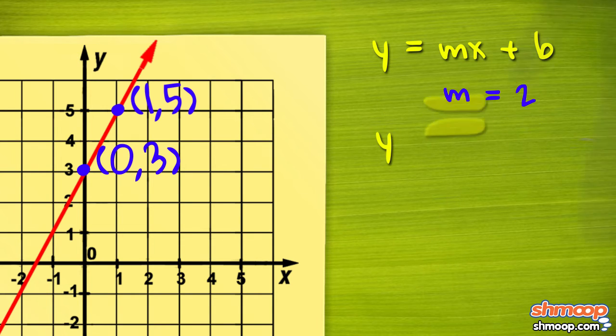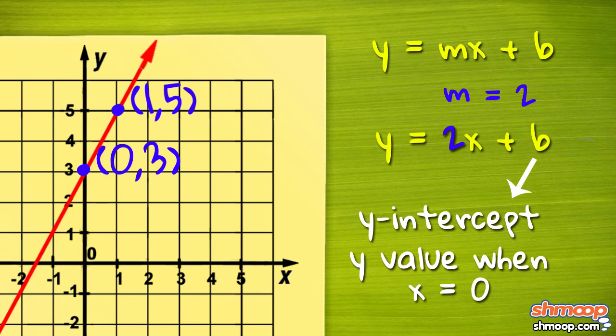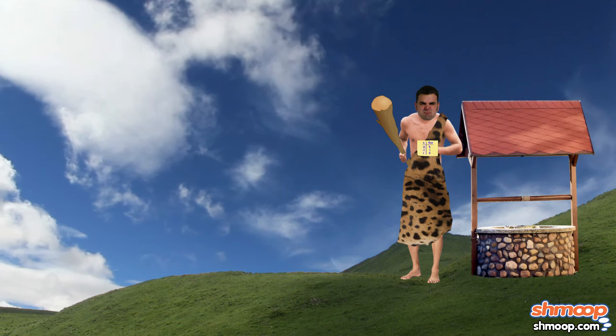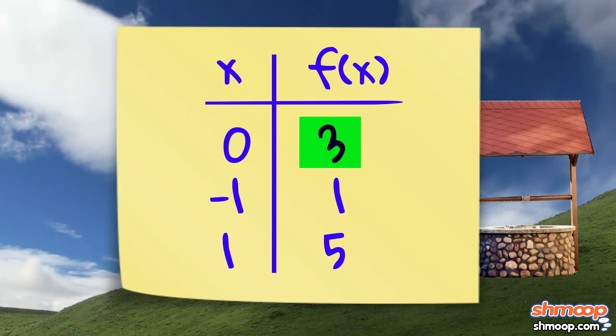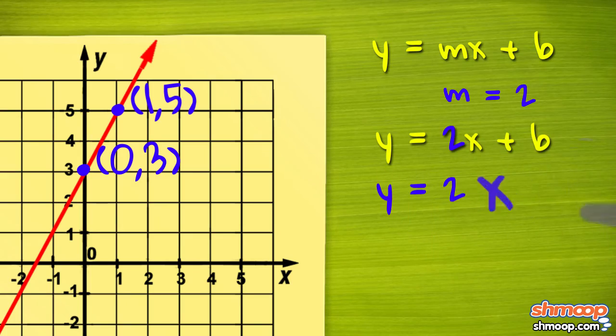Now our equation is y equals 2x plus b. b represents the y-intercept, or the y-value when x equals 0. The troll gave us this point. The y-intercept is 3, which makes our equation y equals 2x plus 3.